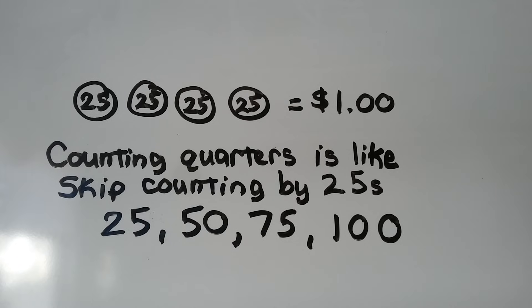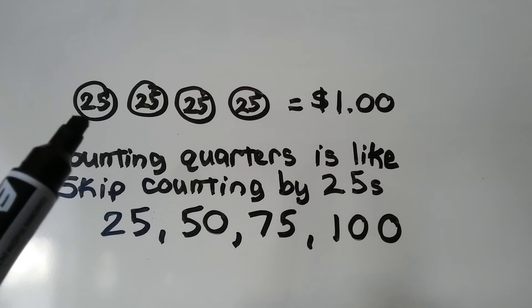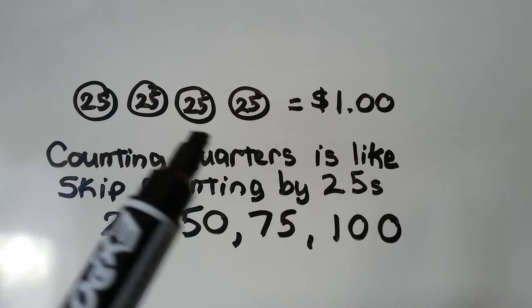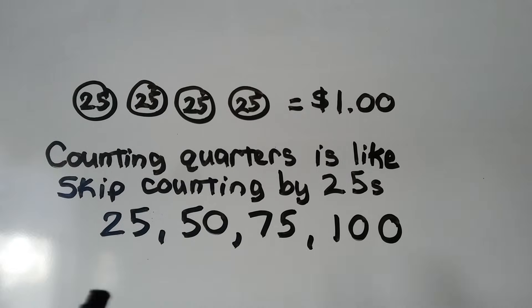Counting quarters is like skip counting by 25s. We have 25, 50, 75, a dollar. We can do that with compatible numbers 25, 50, 75, 100 to help us add to estimate.